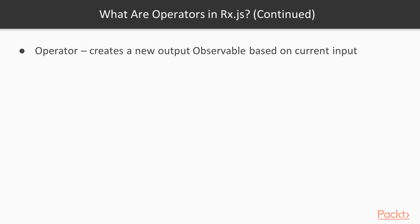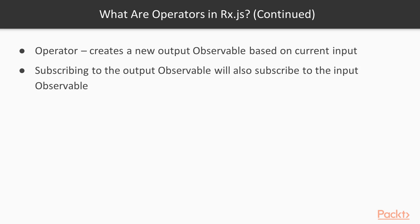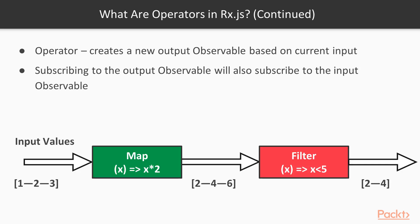An operator is a function which creates a new observable based on the current observable. Subscribing to the output observable will also subscribe to the input observable. As you can see in the diagram, operators re-emit values to a new output observable and modify these values at the same time. There are two types of operators: pipeable operators and observable prototype methods.